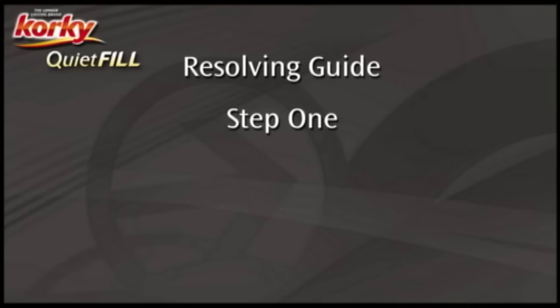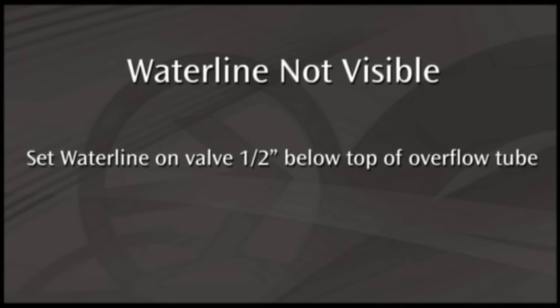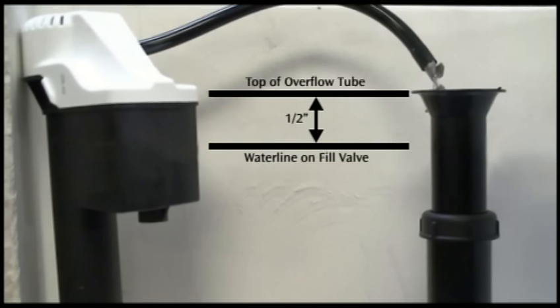If the water level is rising above the top of the flush valve overflow tube, the fill valve may not be set to the correct height. Confirm the water level mark on the valve is set to the same height as the toilet's manufacturer water line. If the manufacturer's water line is not visible, set the water mark on the valve 1.5 inch below the top of the flush valve overflow tube.